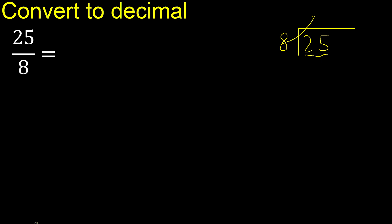8 multiplied by 4 is 32, which is greater. Multiply by 3: 24 is not greater. 25 minus 24 is 1. Next.